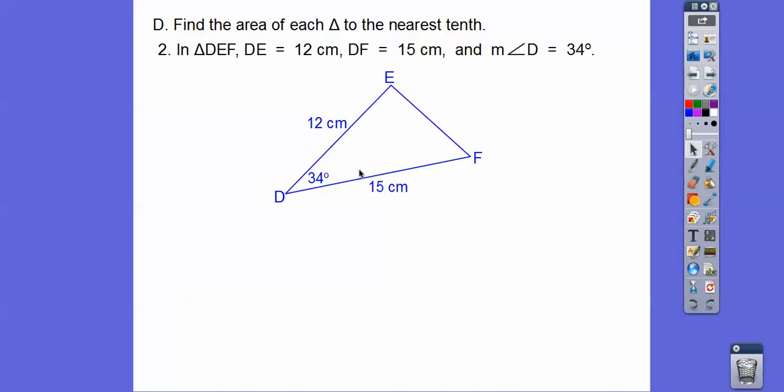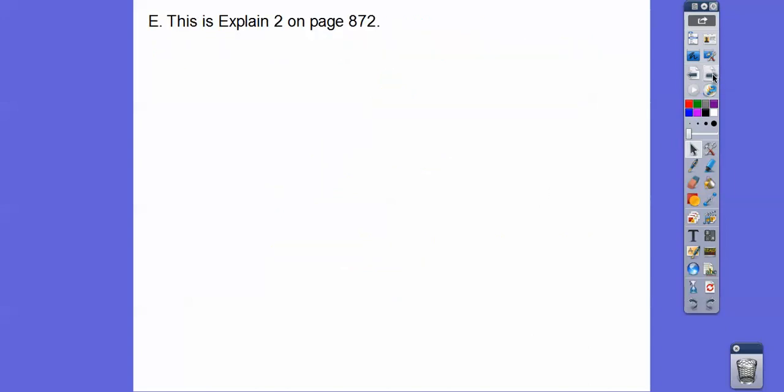So we're going to go one half this times this times the sine of 34. Okay. So it's always the included sides with the angle right there. So the sine of 34 is 0.5592. And then, so one half is 0.5 times 12 times 15 times that. And you get about 50.3. And always, area is always in terms of centimeters squared right there.